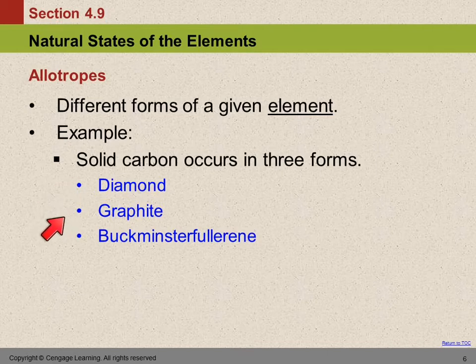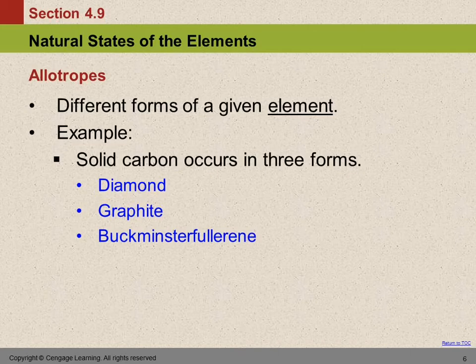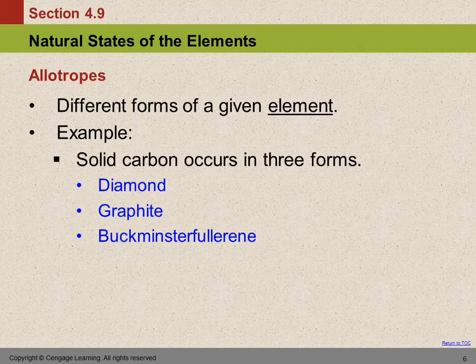And many of you are writing with graphite right now. Graphite is what we call pencil lead. And it's black and it's soft and it's slippery, right? It is made of just carbon atoms. And a diamond is clear and very hard, right? And it is also made just of carbon atoms. They're both elemental forms of carbon. But they have very different properties because of how the atoms are attached to each other.